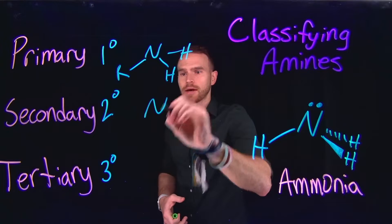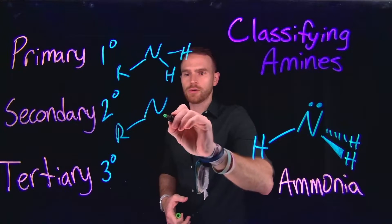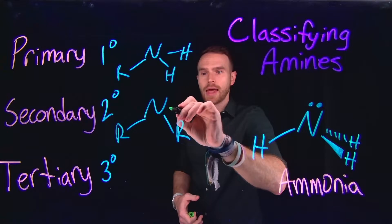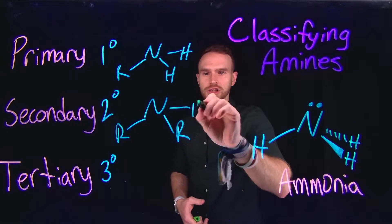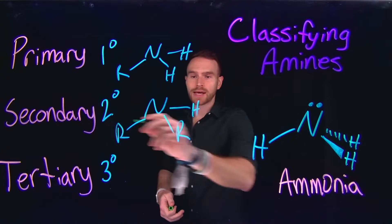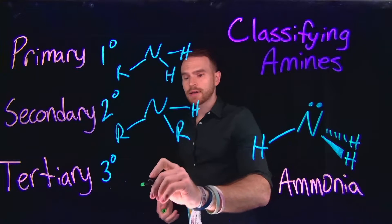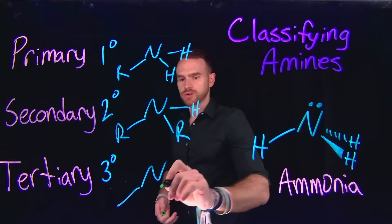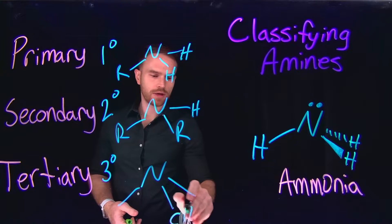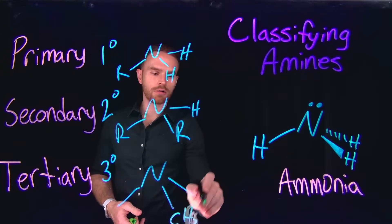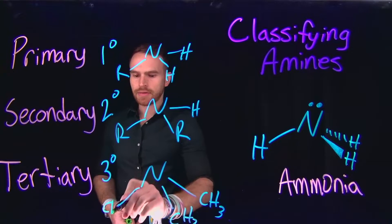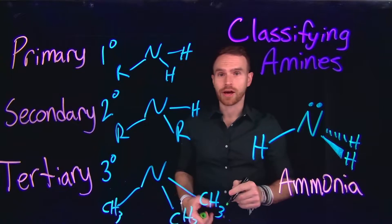Now, if instead we replace two of those hydrogens with organic substituents — and R is just meant to indicate any sort of alkyl chain — then we get a secondary amine. And finally, if we replace the final substituent with different organic groups, so for example we could call all of them methyl groups, then we would say that this is a tertiary amine.